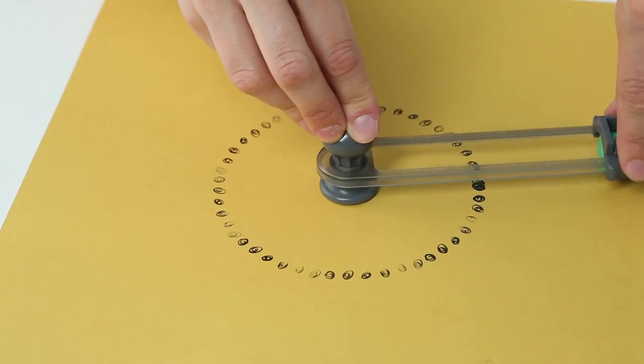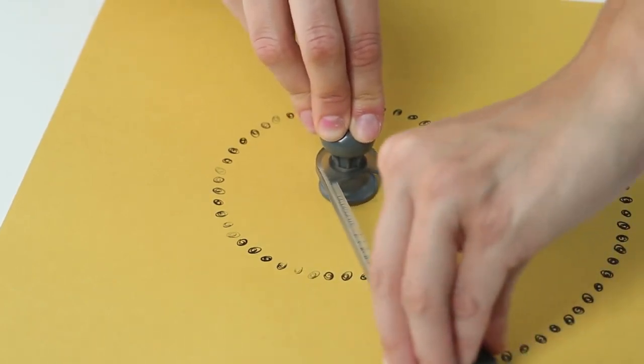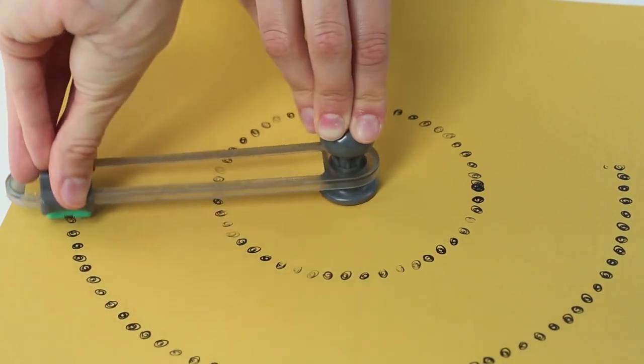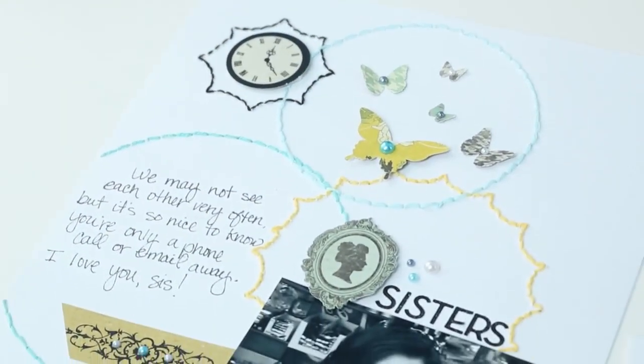Create perfect circles on any craft project with We Are Memory Keeper's Sew Circles tool. The Sew Easy Circle tool helps to create perfect 3 inch to 11 and a half inch circles each and every time.